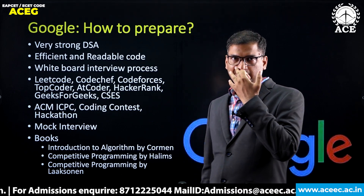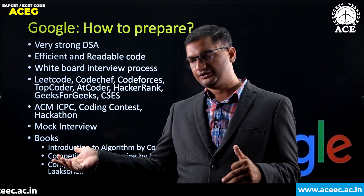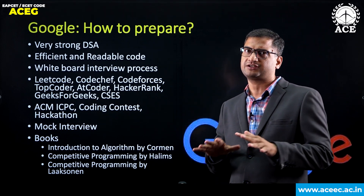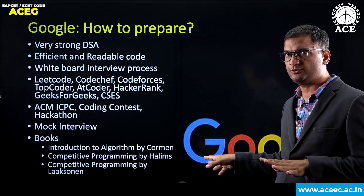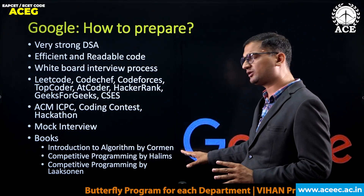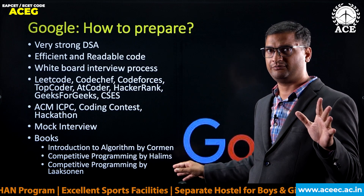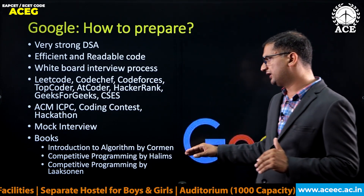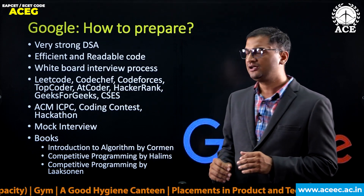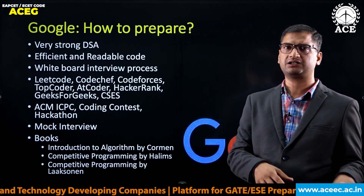If you are having some senior connections, you should also have mock interviews in between. Talking about books — one of the most standard books is 'Introduction to Algorithms' by Cormen, known as the Bible of computer science, very well written by Cormen from the Massachusetts Institute of Technology. Then we have 'Competitive Programming' by Haleem and 'Competitive Programming' by Lakshmanan. These books can help you prepare for DSA which will be asked in interviews like Google.